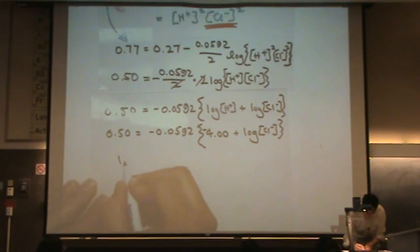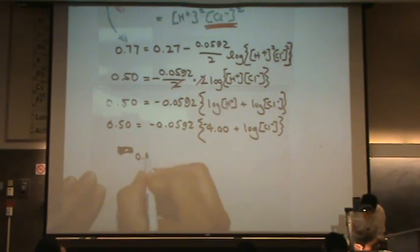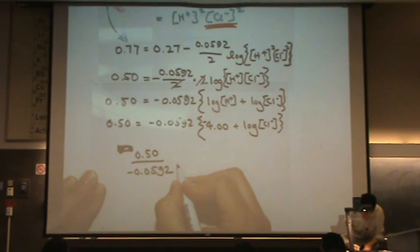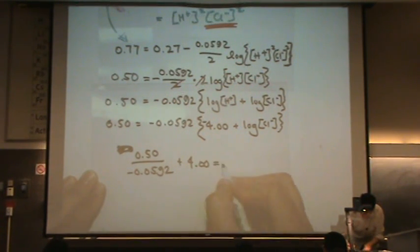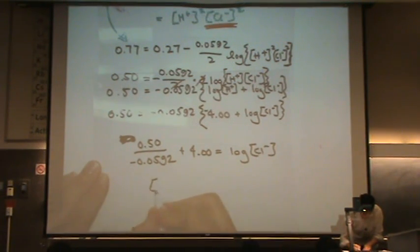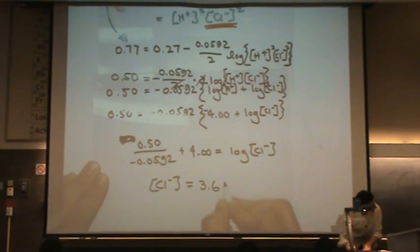So the 0.50 divided by negative 0.0592, I'm going to add 4 to that. And that's going to be the log of CL minus. Or the concentration of CL minus will end up equally 3.6 times 10 to the minus 5 molar.